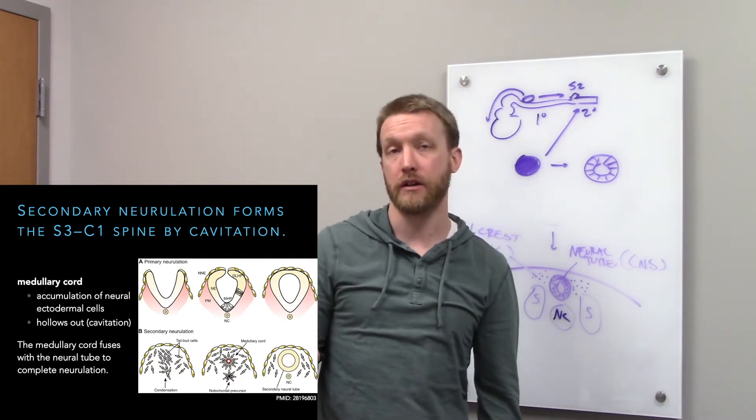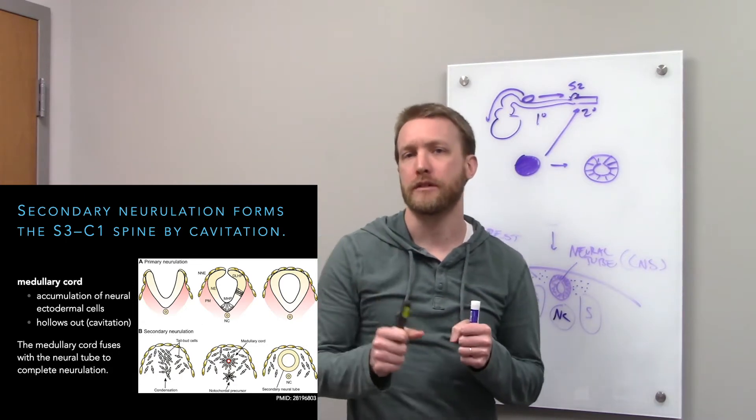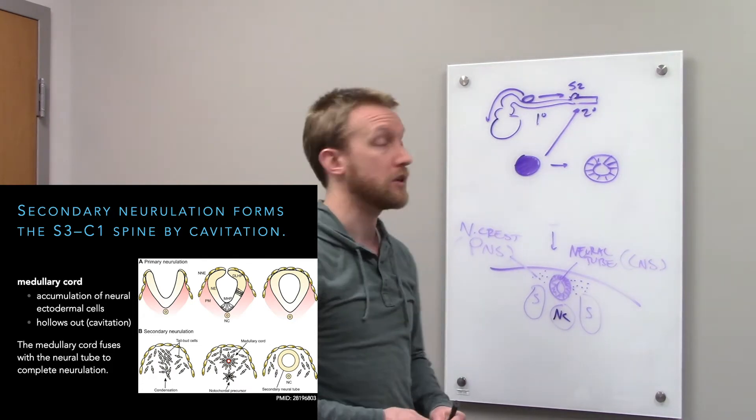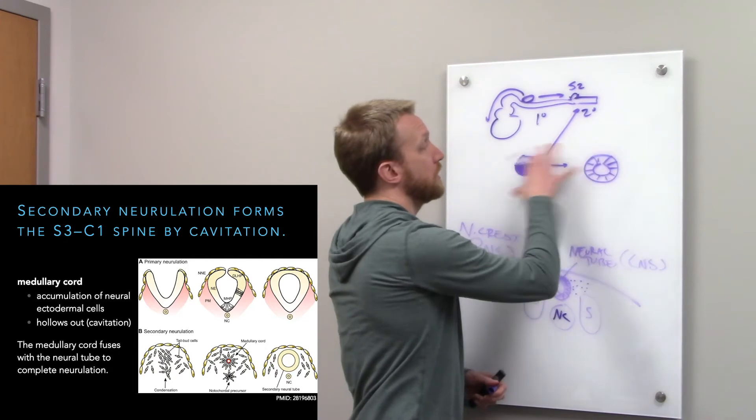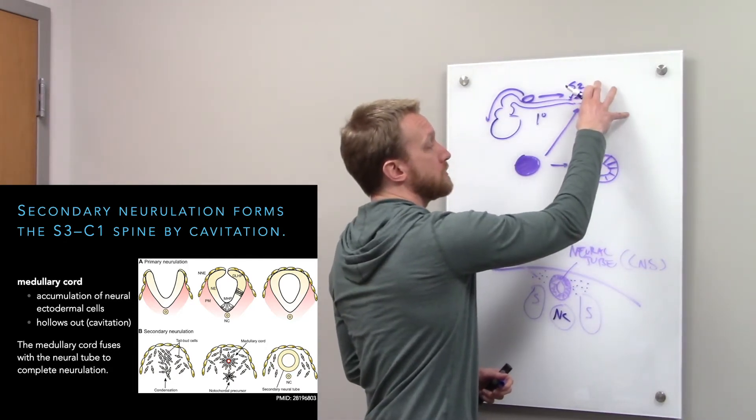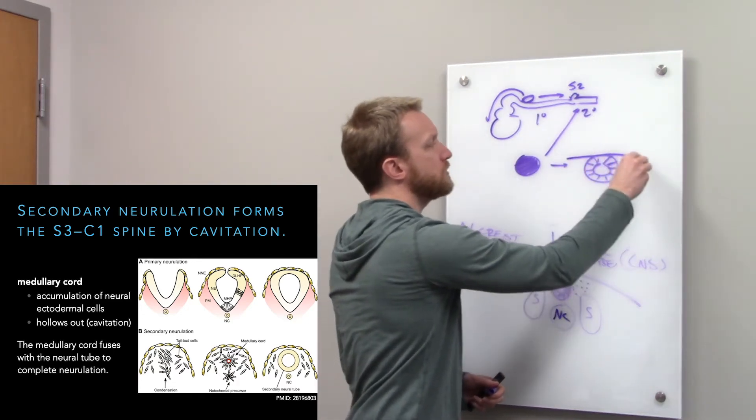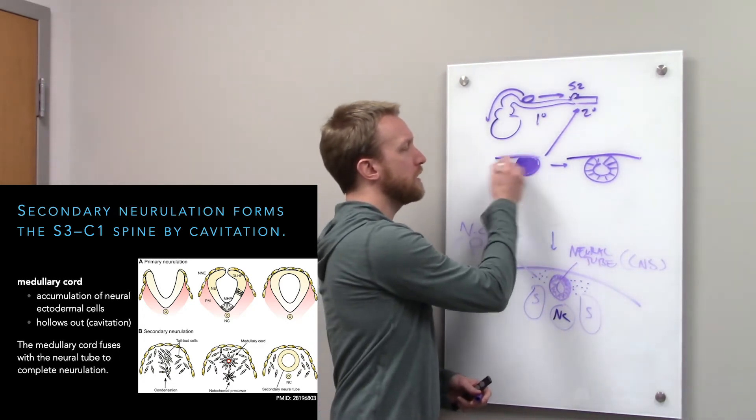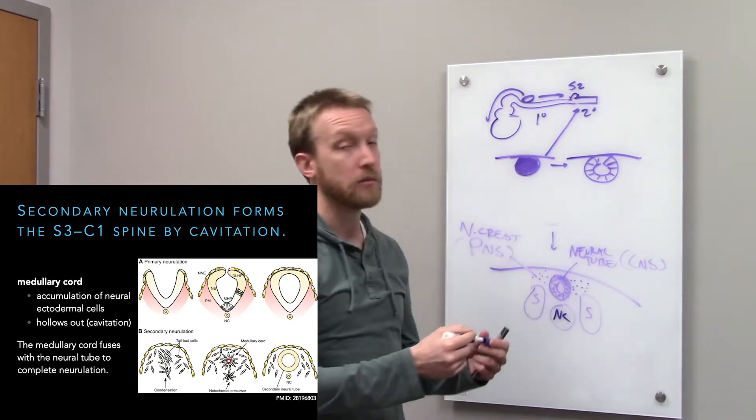The problems that can occur with secondary neurulation is that we fail to separate that medullary cord from the overlying tissue. So it might get stuck to it. This can create something called tethered cord syndrome. If our most distal or caudal portions of the spinal cord get fused to overlying structure, when we're putting our medullary cord together, if we don't cleanly separate it from the skin, this is going to give us problems later on.